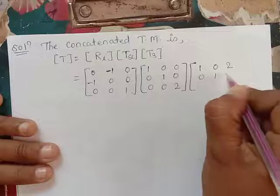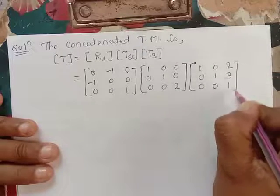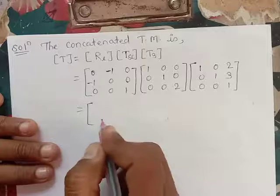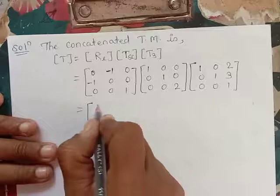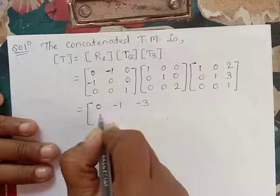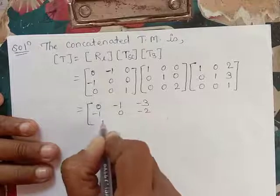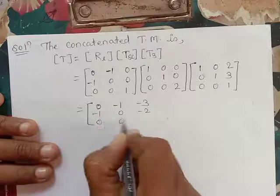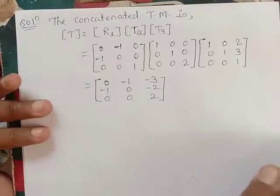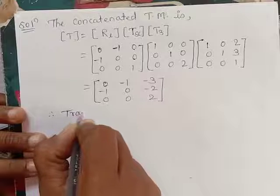The product of the three matrices gives: [0, −1, −3; −1, 0, −2; 0, 0, 2]. Now we apply this to triangle ABC to get the transformed triangle A*, B*, C*.